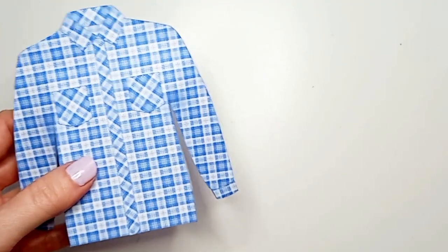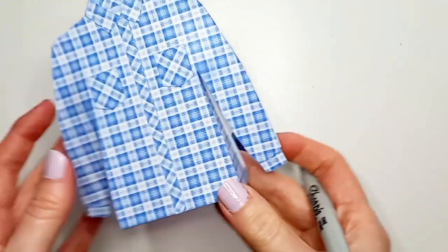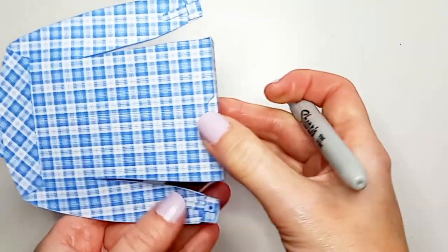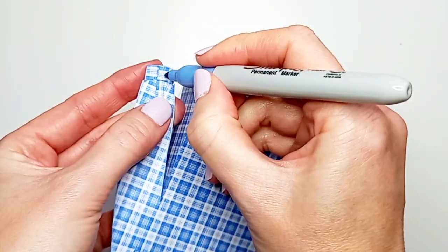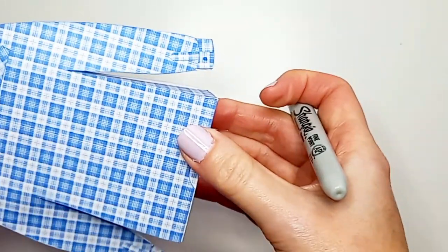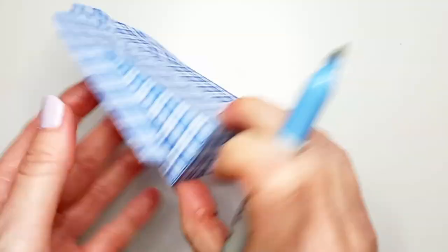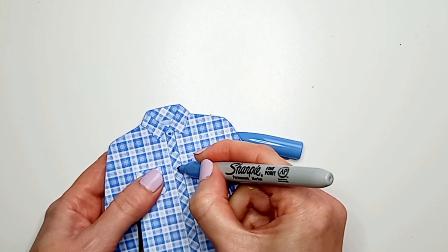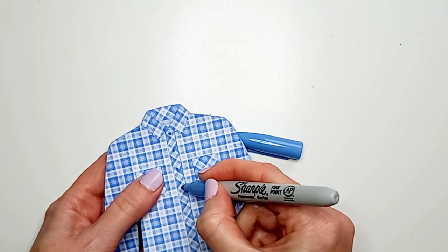Okay, so now I want to add some buttons to my shirt. So I'm just going to draw them on using a blue pen. And I need one on the back of each cuff. Then I'm going to do a line of them going down the front. Trying to get them evenly spaced.